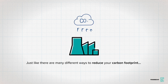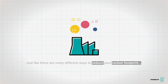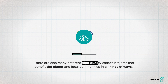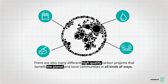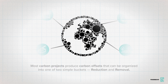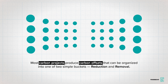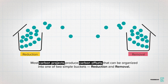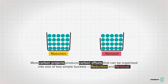Just like there are many different ways to reduce your carbon footprint, there are also many different high-quality carbon projects that benefit the planet and local communities in all kinds of ways. Most carbon projects produce carbon offsets that can be organized into one of two simple buckets: reduction and removal.